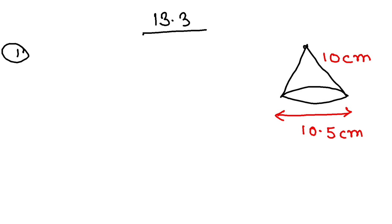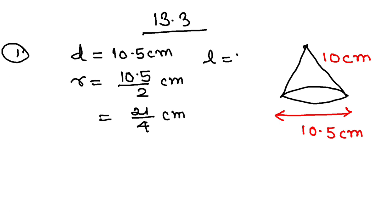So what is basically given is that the diameter is 10.5 cm, which means the radius is 10.5 by 2. That can also be written as 21 by 4, by multiplying both numerator and denominator by 2. And your L, the slant height, is obviously 10 cm.